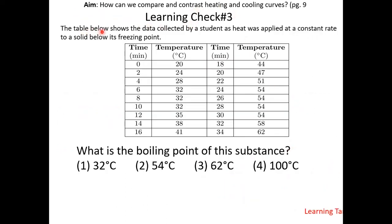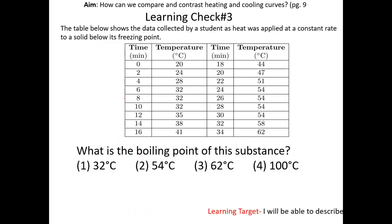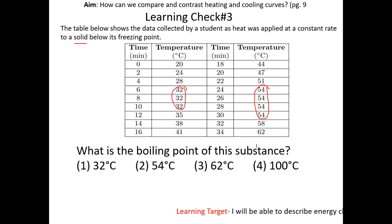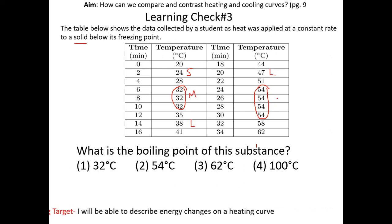Learning check number 3: a table shows data collected as heat was applied at a constant rate to a solid below its freezing point. What is the boiling point of this substance? According to the question, the substance starts out as a solid. During a phase change, the temperature is constant, so we highlight those values on the table. Since we start in the solid state, the first plateau is melting, then the liquid phase, then boiling. The answer is choice 2.